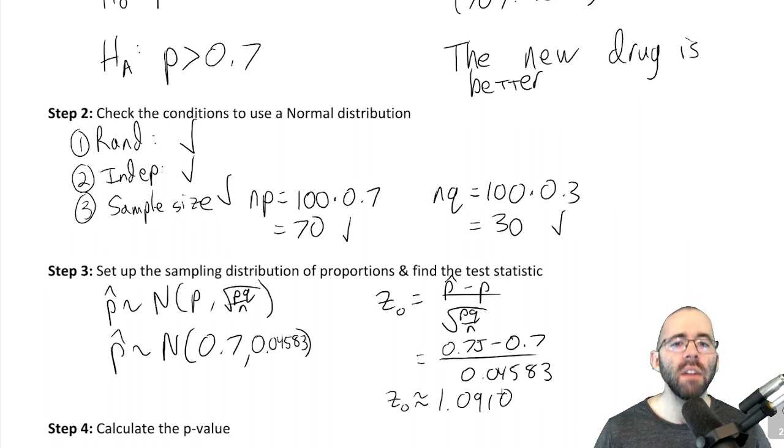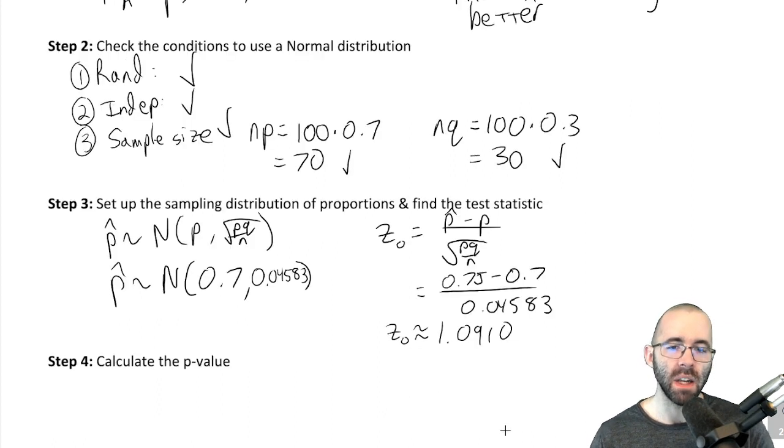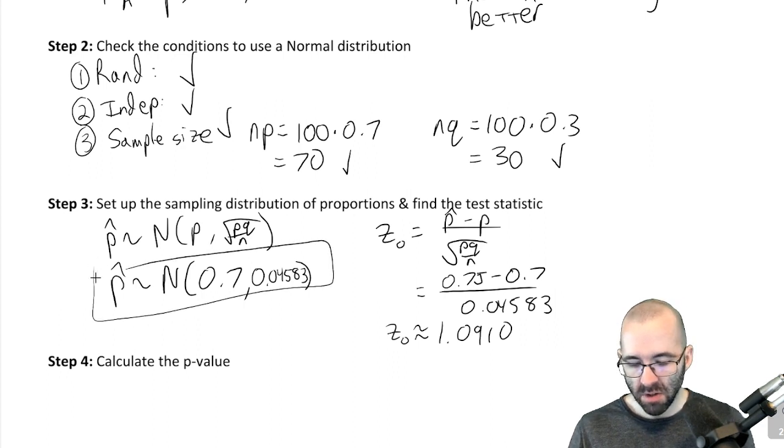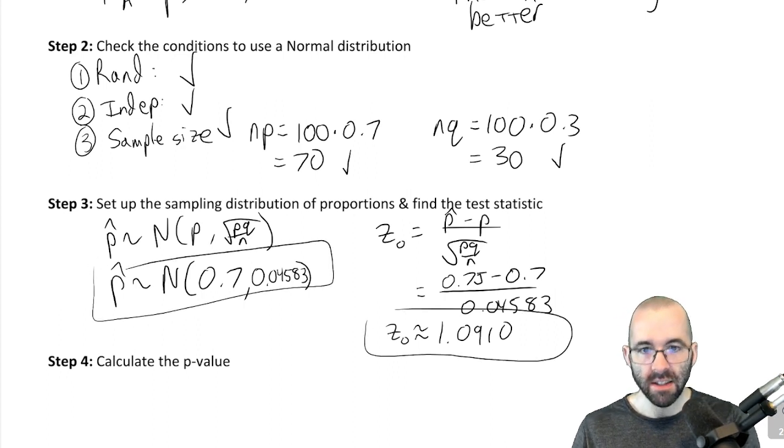We're about one standard deviation above the mean here. Not super common but not super uncommon either to be one standard deviation above the mean. We know that 68% of the data is within one standard deviation because of the empirical rule, which means that 32% will be outside of one standard deviation. We're not super rare here. That's our sampling distribution, that's our test statistic.